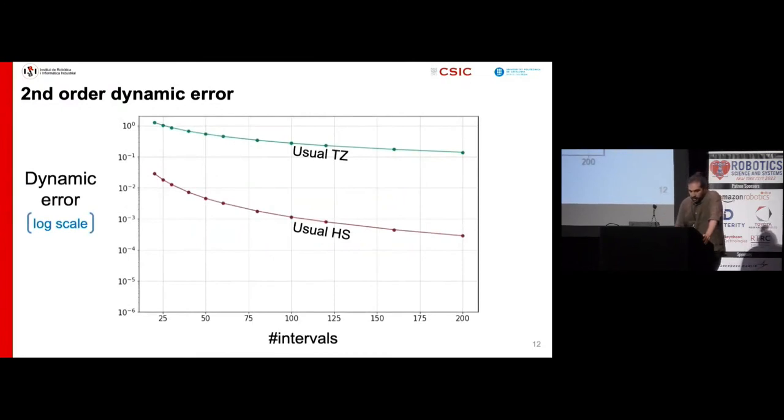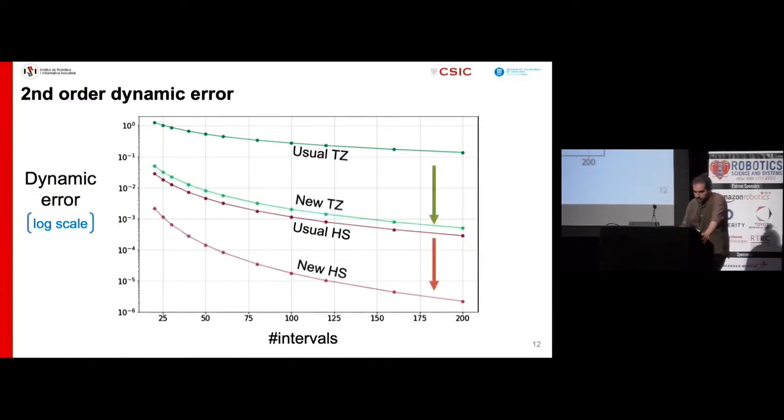Here, we can see how this error decreases with the number of time intervals for the usual schemes. This is for the bipedal problem, but for the cart pole the plot is similar. Clearly, the Hermite-Simpson scheme shows a much lower error compared to the trapezoidal schemes, but when we switch to the new schemes, the error for each method is reduced by more than one or even two orders of magnitude, depending on the case.